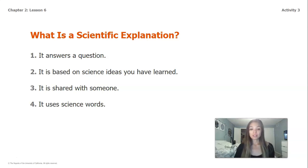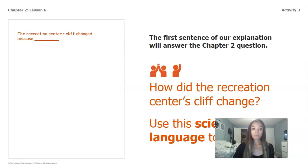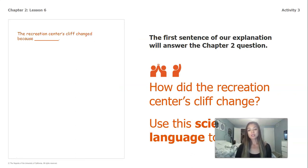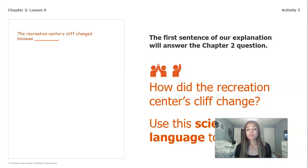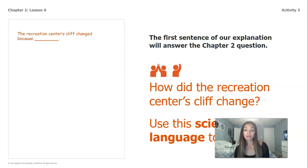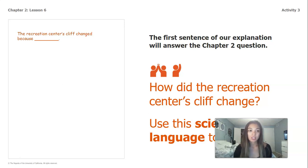The first sentence of our explanation will answer our chapter two question. Our question again was: how did the recreation center's cliff change? We're going to be using scientific language and vocabulary to discuss this, and we're already going to be starting off with a sentence stem: 'The recreation center's cliff changed because blank.'